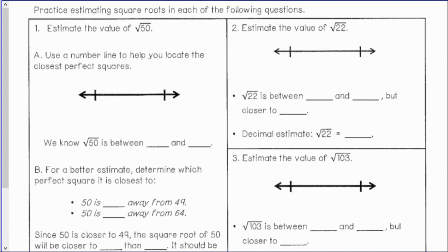If I want to estimate square roots, I can estimate their value to the nearest tenth of a decimal. Looking at number 1, I want to estimate the value of the square root of 50. Using a number line can help me locate the closest perfect squares next to the square root of 50.